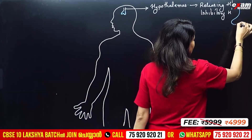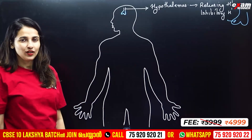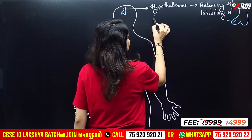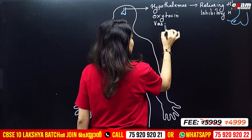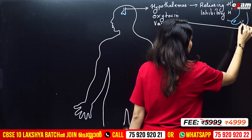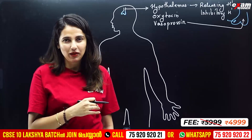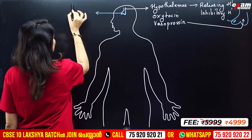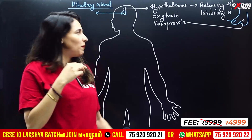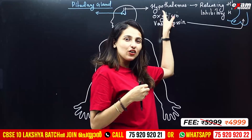This is the pituitary gland. Hypothalamus produces hormones — oxytocin and vasopressin — and these are stored in the posterior lobe of the pituitary gland. The pituitary gland is a bi-lobed gland with an anterior lobe and a posterior lobe.